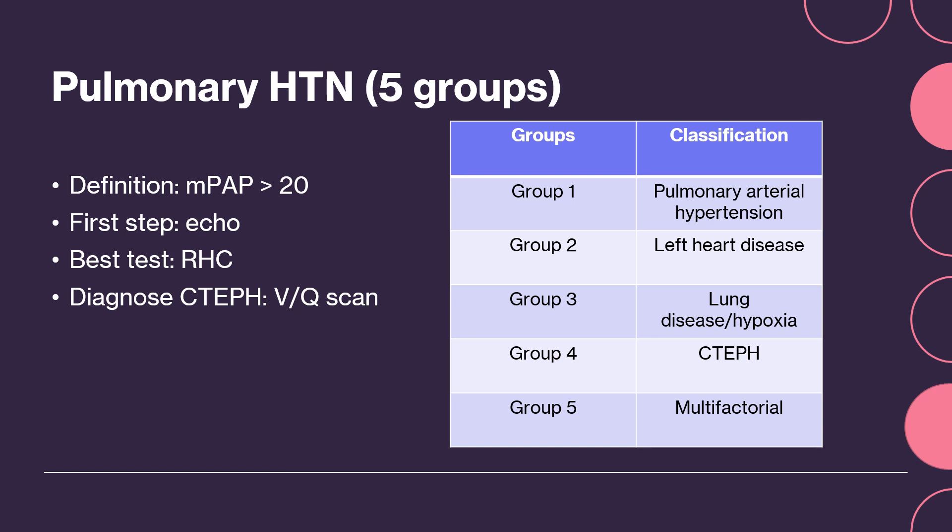Group 1 is known as pulmonary arterial hypertension. Group 2 is often caused by left heart disease. Group 3 is secondary to lung disease and/or hypoxia.